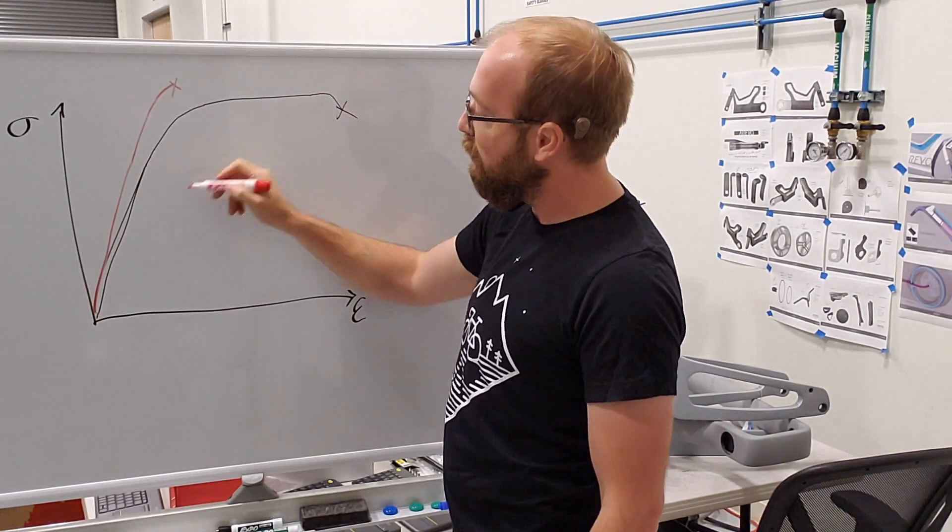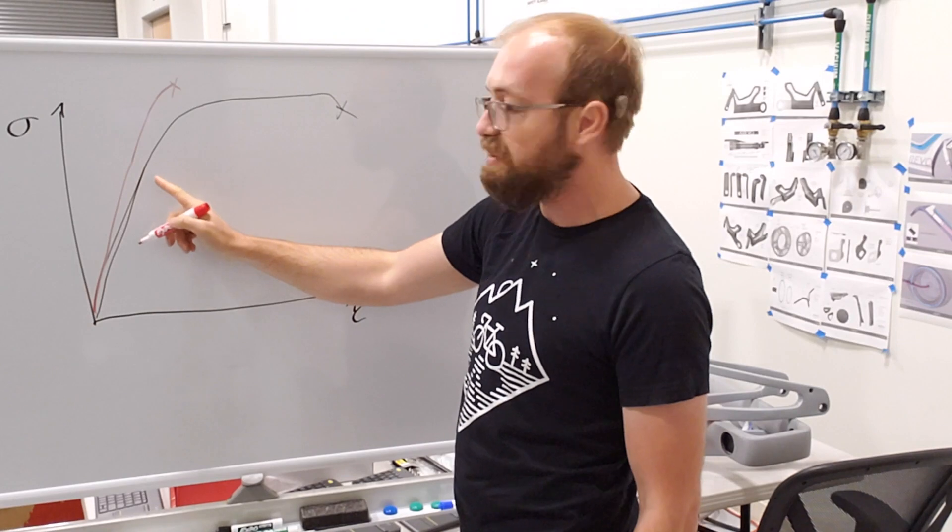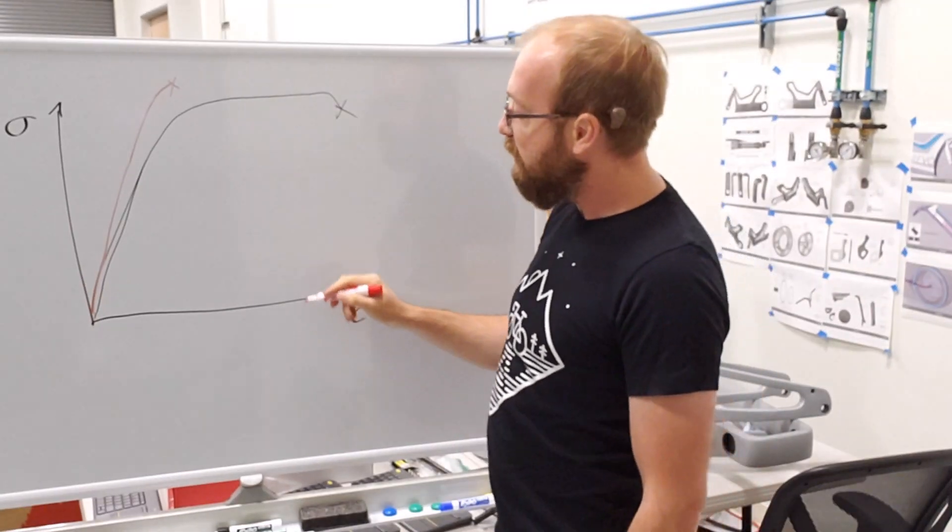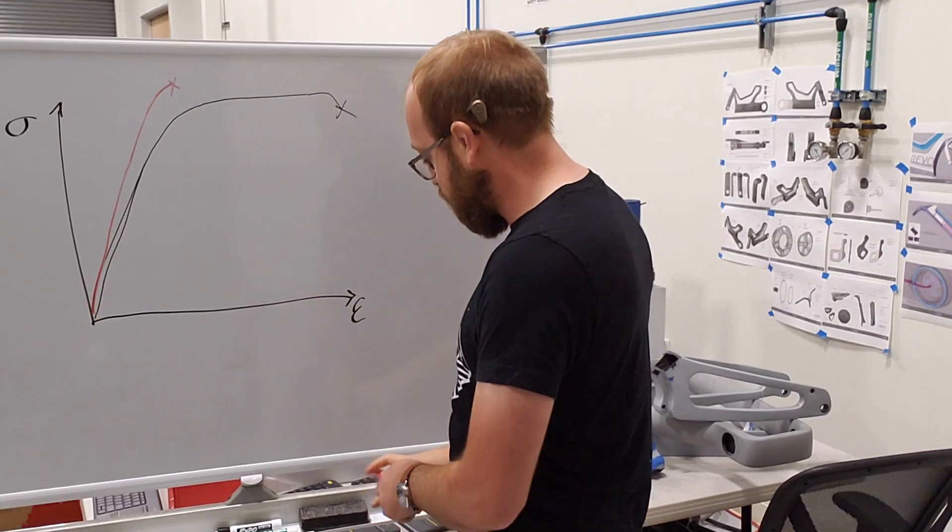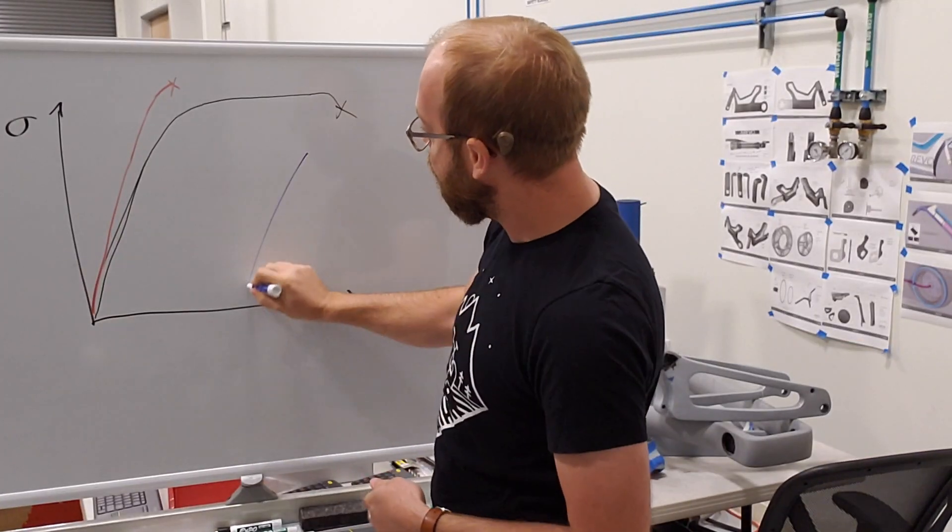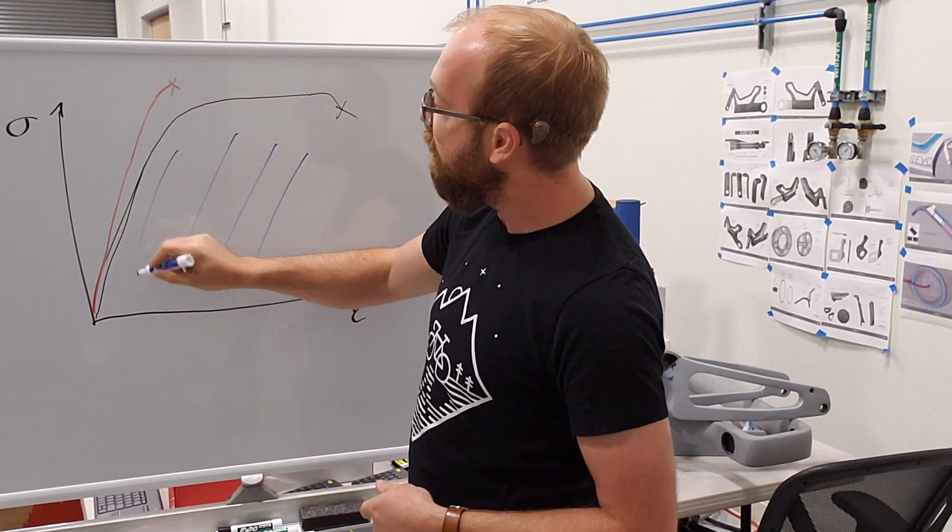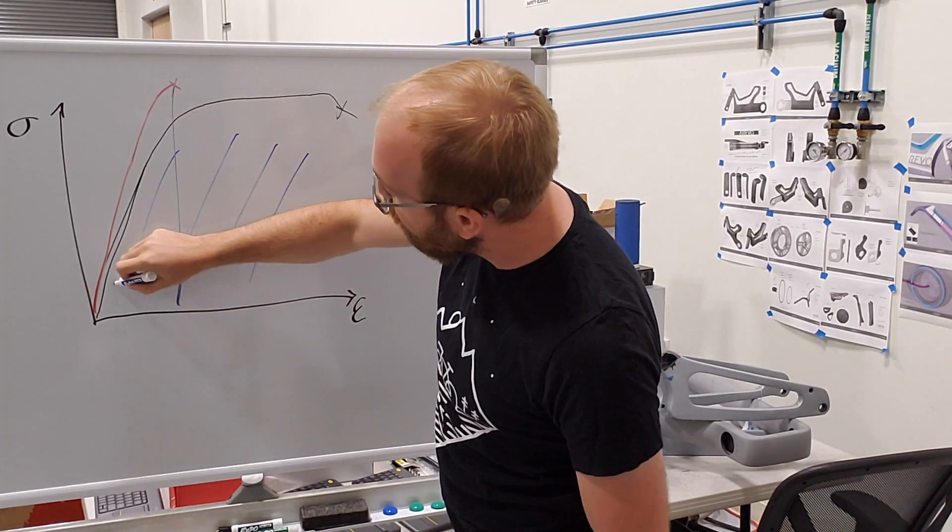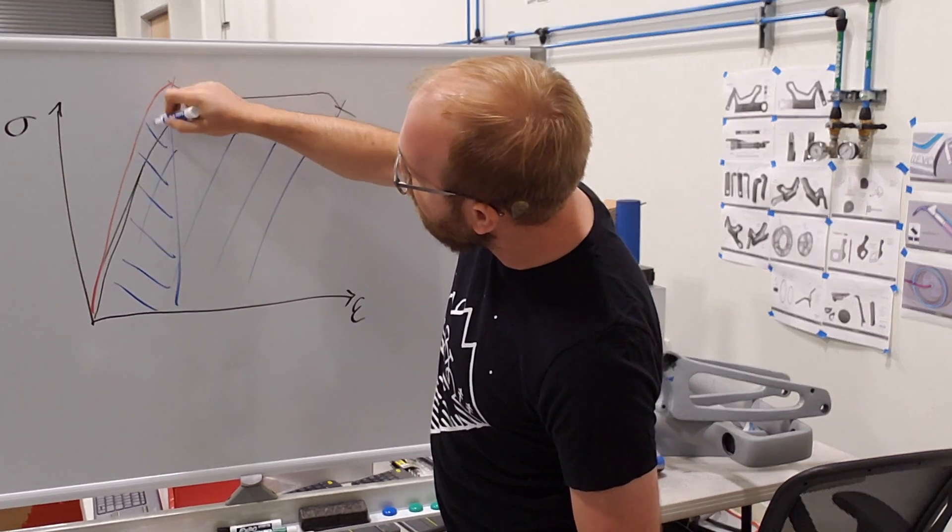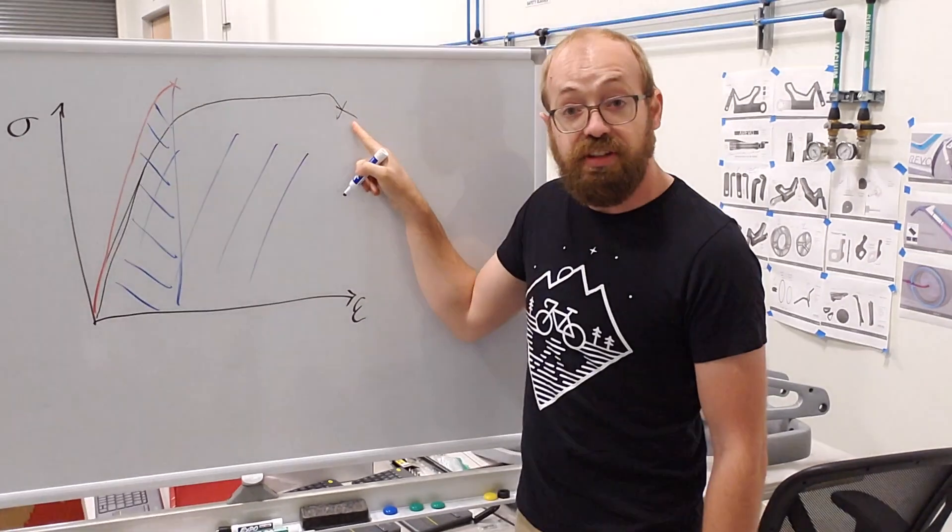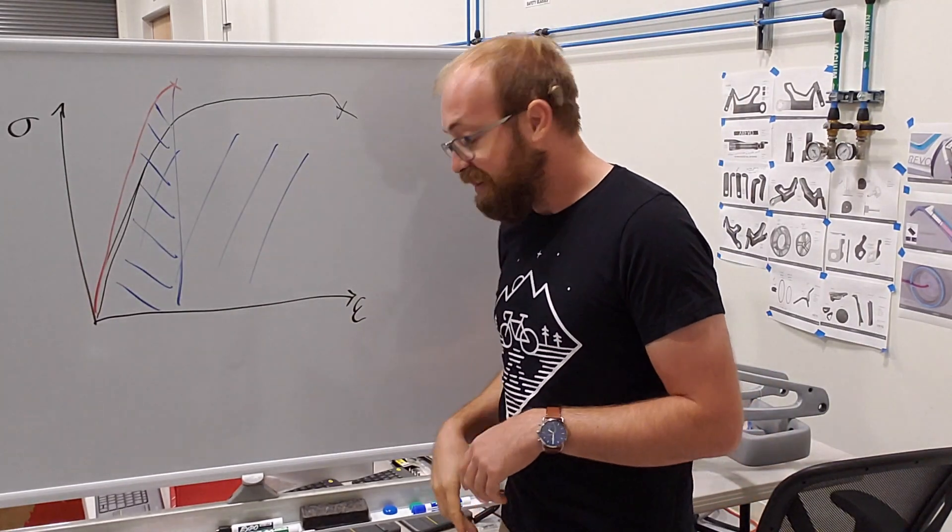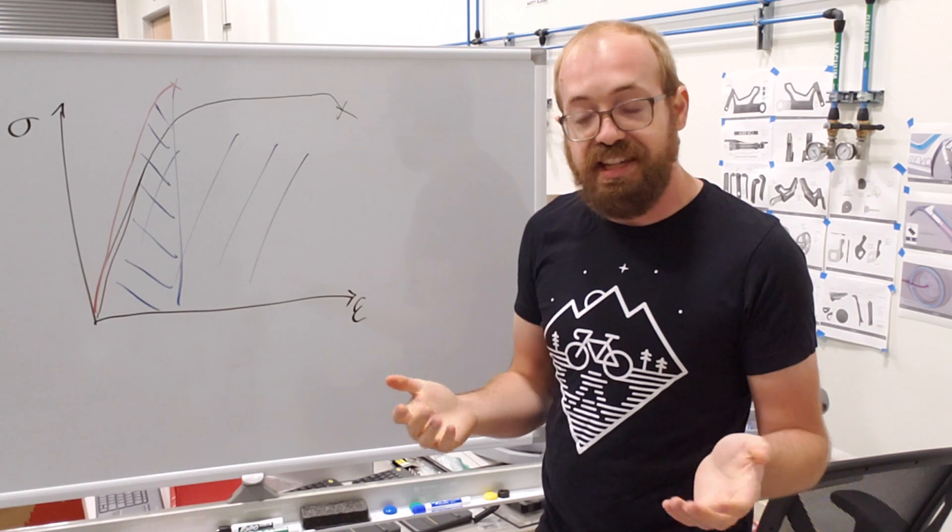So they've taken about the same amount of load, and they have about the same amount of stiffness, but this bike took a lot more strain. And specifically, the area under this curve right here, that area is defined as the toughness. So you can think on the red curve here, the brittle curve, we've only got this much area, whereas on the black curve, the Superstrata curve, we've got a lot more area, so it's a lot tougher. And that's the definition of engineering toughness in this case.